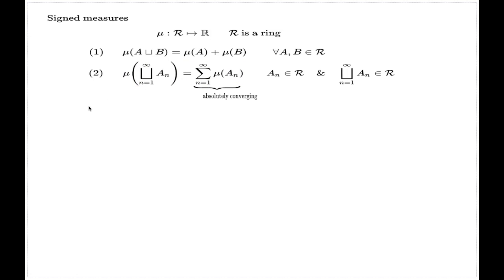Everything a person should know about signed measures I collected in the following lemma. If you look at a signed measure which lives on a sigma ring rather than just a ring, then all important properties are collected here. The supremum of the signed measure across the subsets of a given element A is always finite, as well as the infimum is always finite for any element of your original sigma ring.